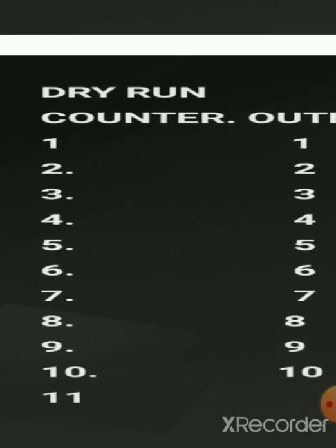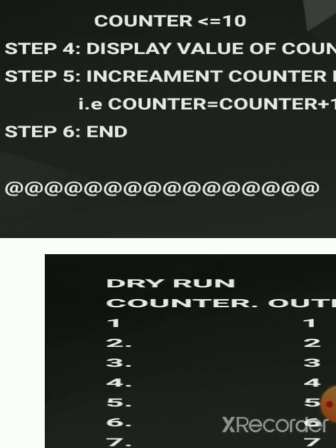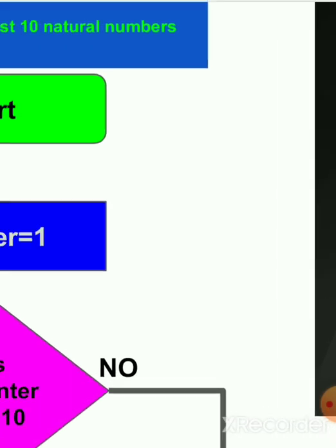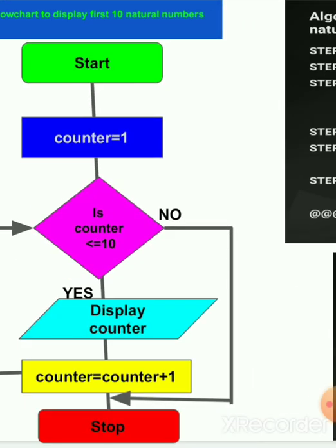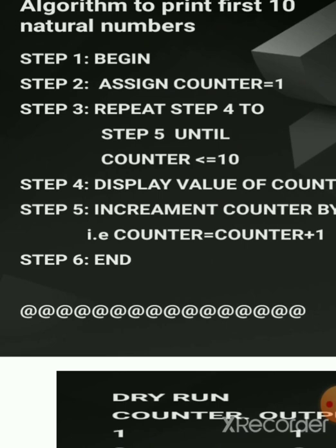Dry run means we will see roughly how each step gets executed without running on the computer. We will see first with the algorithm. An algorithm is actually a sequence of instructions for performing a specific task — a set of instructions written in an English-like language before doing it practically on a computer.